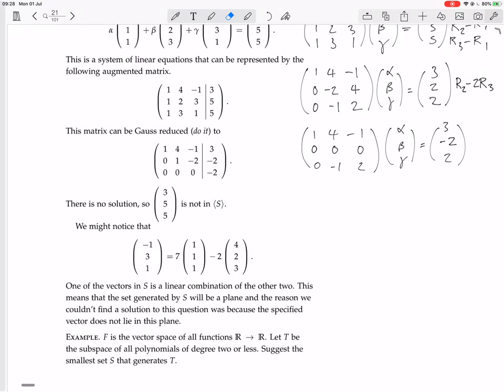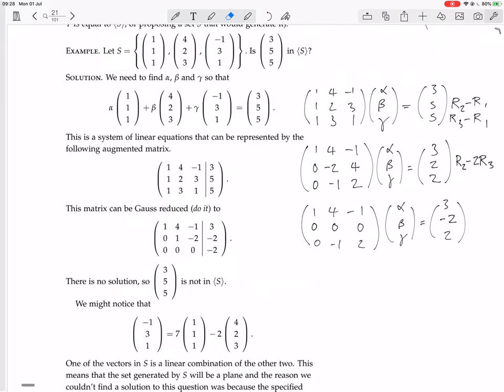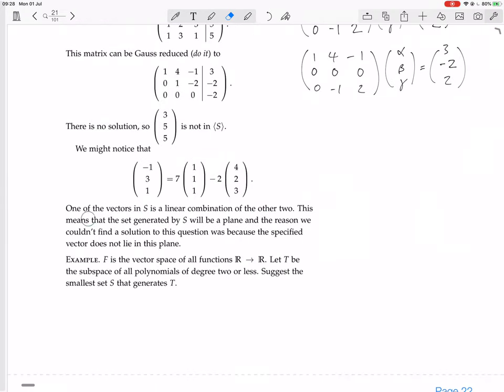Now it says we might notice that one of the vectors, (−1, 3, 1), equals 7 times (1, 1, 1), that first vector, minus 2 times (4, 2, 3), the second vector. So one of the vectors in S is a linear combination of the other two. This means that the set generated by S will be a plane.